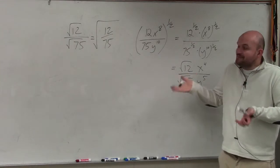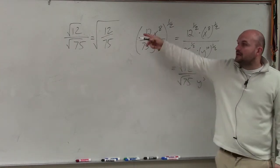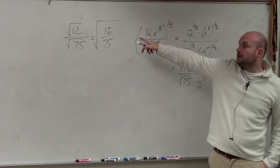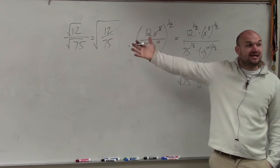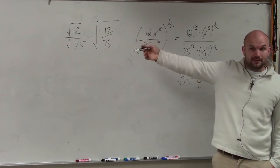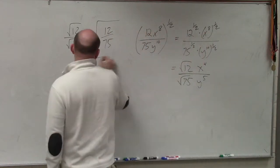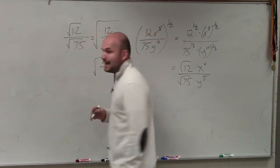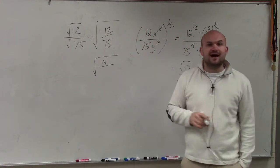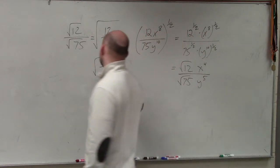So basically I just want to see, can I simplify 12 over 75? And I notice that I do have a common factor of 3. 3 goes into 12 four times, and 3 goes into 75 twenty-five times.